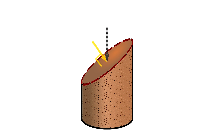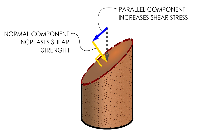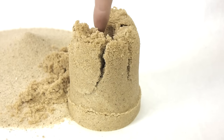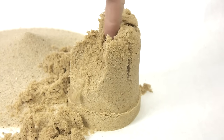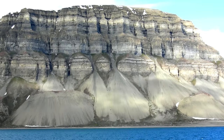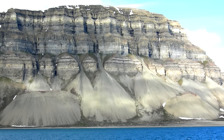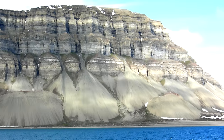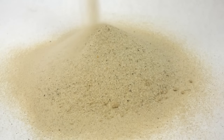On this plane, the force is partly acting normal, increasing the strength, but it's also partly acting in parallel to the plane, increasing the shear stress. The steeper the angle of the failure plane, the more the vertical force contributes to shear stress and the less it adds to shear strength. If the shear stress exceeds the strength, sliding occurs, and we say that the material has failed. This is why granular materials generally can't stand vertically — the weight of the material itself is enough to cause a shear failure along an angled plane.